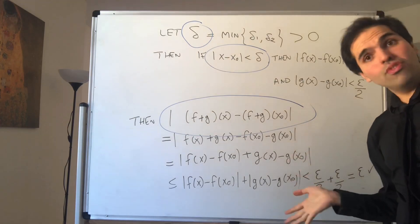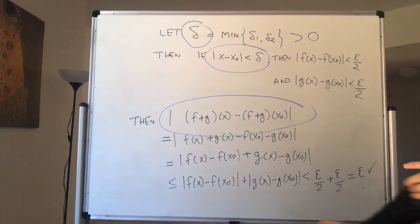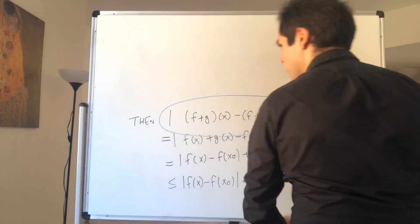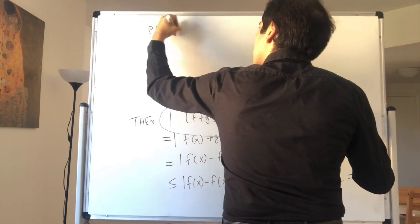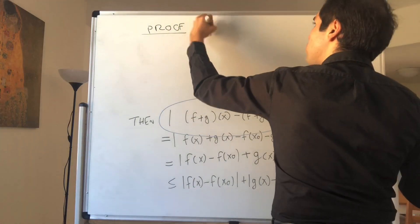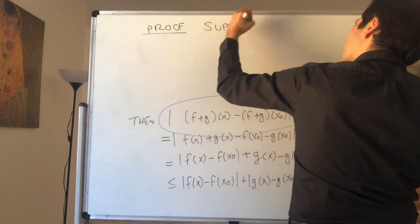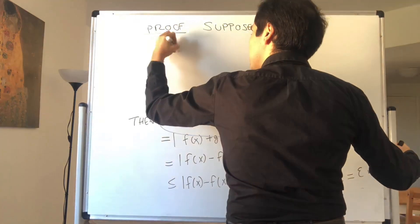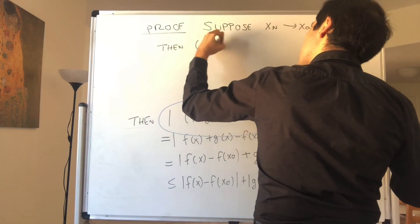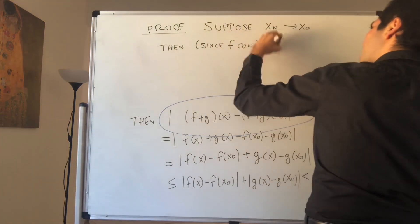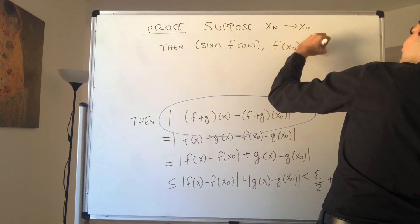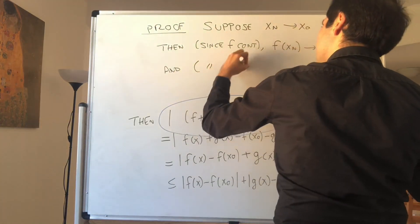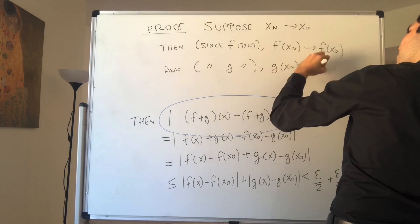Now to prove the same for addition using the sequential definition. Suppose x_n is a sequence that converges to x naught. Then, since f is continuous, we get f(x_n) goes to f(x naught). And since g is continuous, we get g(x_n) goes to g(x naught).